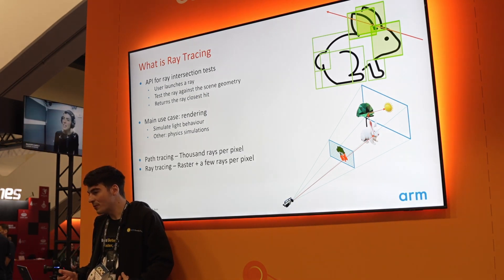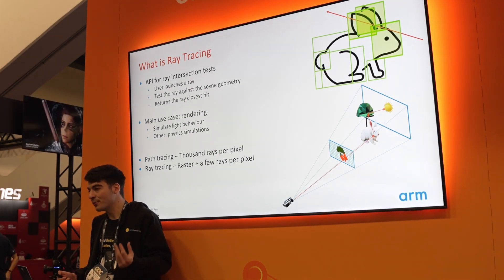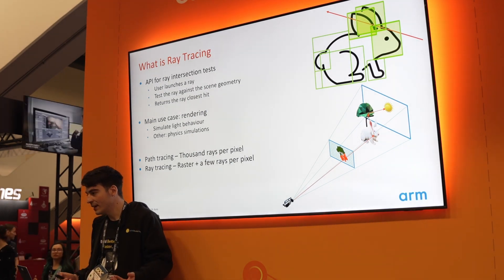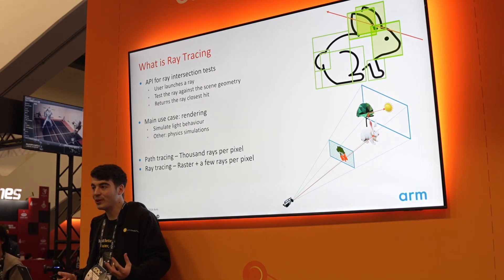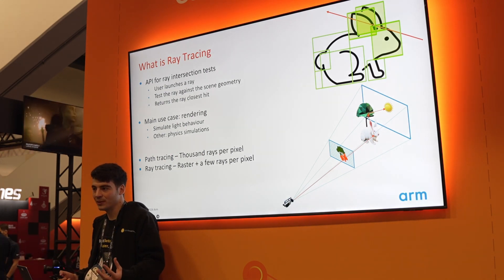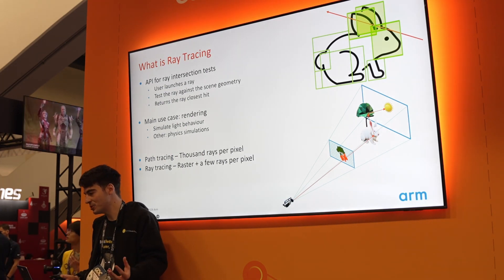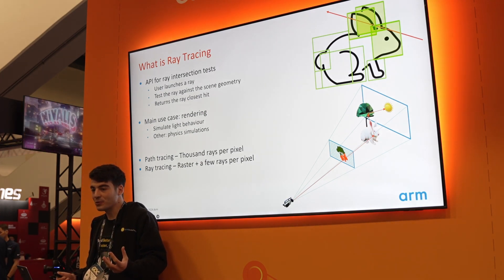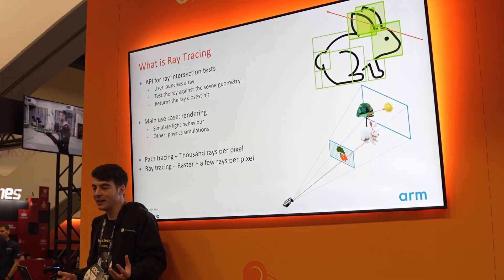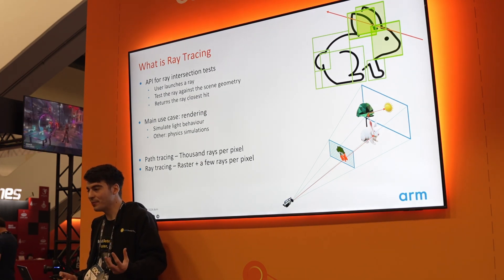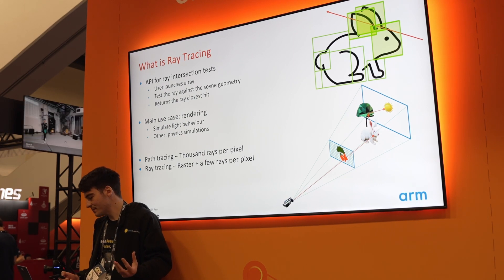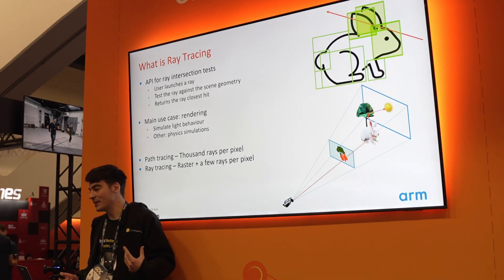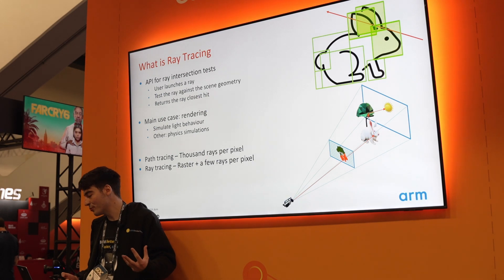Traditionally, when you do path tracing, you have to launch thousands of rays per pixel if you want to obtain an image that is not noisy. It's very expensive, and it's not even feasible on high-end desktop. Instead, what we prefer is a hybrid approach. We compute the raster pass where we compute the G-buffer normally, and then we launch only a few ray tracing rays from there. This allows us to render the image with very few rays per pixel — just three or four.